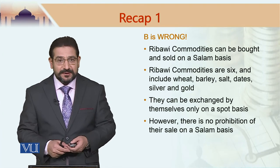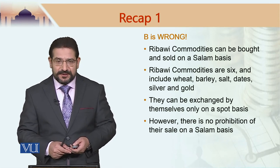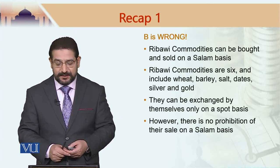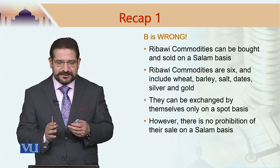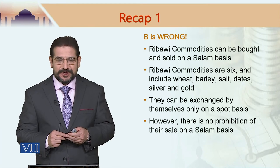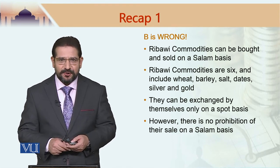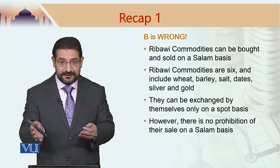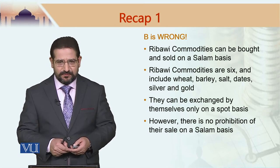Regarding option B — Ribawi commodities — what are Ribawi commodities? There are six of them: wheat, barley, salt, dates, silver, and gold. These six commodities can only be exchanged with themselves on a spot basis. So if I want to exchange wheat for wheat, it is possible only on a spot basis. However, these commodities can be bought and sold on a salam basis, because in a trade of wheat versus money the counter-values are different — this is something we have already explained in a previous module.